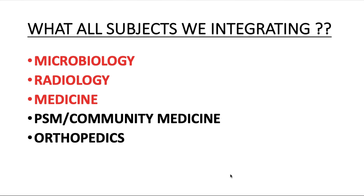The microbiology points you cannot afford to miss: Mycobacterium tuberculosis is the main causative organism for TB — it is a gram-positive bacteria, non-spore forming, and an obligate aerobe. It is an obligate aerobe due to its G+C content, which is the cell wall component. This might come as a one-mark one-liner fact.